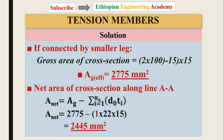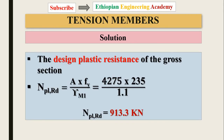The net area formula is: gross area minus (hole diameter × thickness), summing for all holes in the row. The number of holes in that row multiplied by that term gives the reduction. The net area should be calculated accordingly, and then the design plastic resistance of the gross section is calculated using the standard formula.